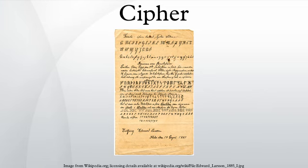Some systems used both codes and ciphers in one system, using super-encipherment to increase the security. In some cases the terms codes and ciphers are also used synonymously to substitution and transposition. Historically, cryptography was split into a dichotomy of codes and ciphers, and coding had its own terminology analogous to that for ciphers: encoding, codetext, decoding, and so on. However, codes have a variety of drawbacks, including susceptibility to cryptanalysis and the difficulty of managing a cumbersome code book. Because of this, codes have fallen into disuse in modern cryptography, and ciphers are the dominant technique.